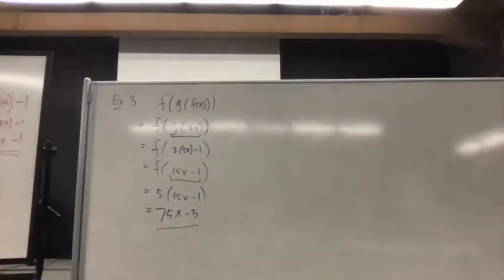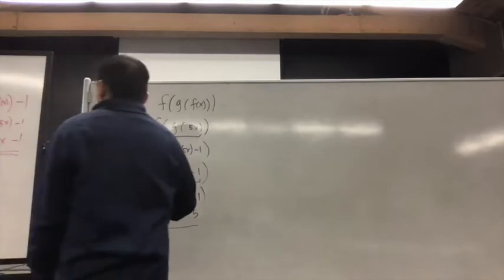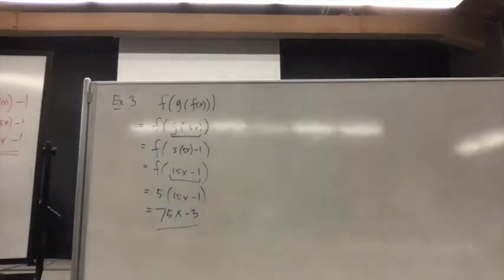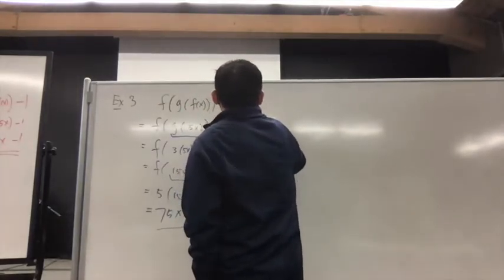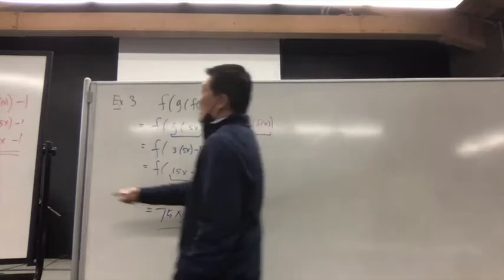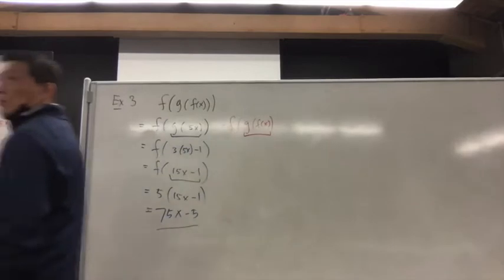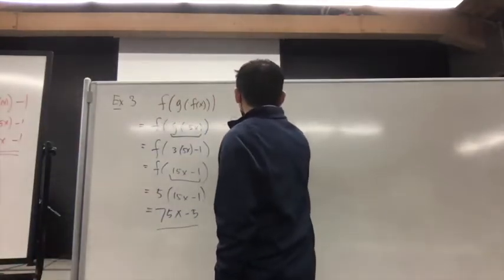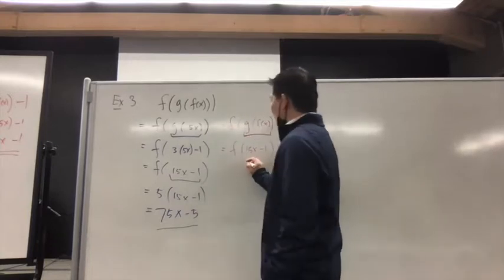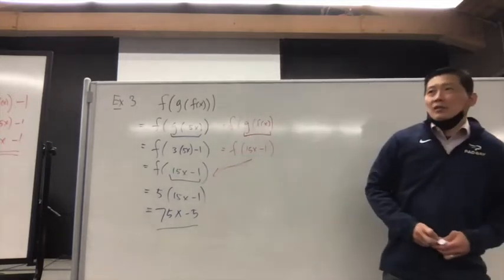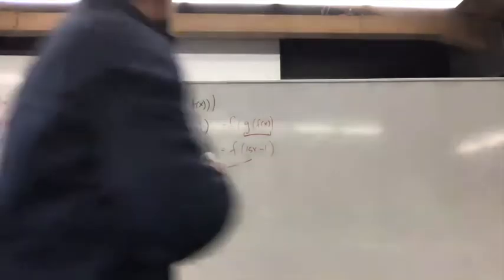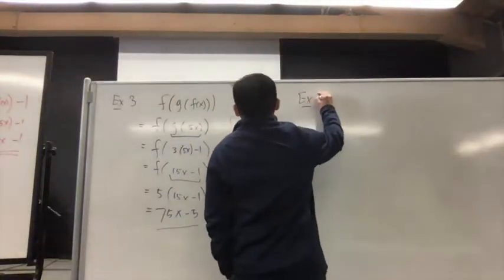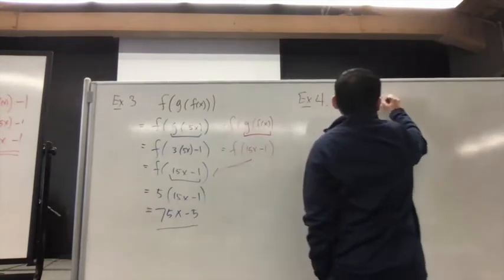Earlier Jeremiah was able to take advantage of the answer we got. You have F of G of F of X — so G of F of X is 15x minus 1. So it's F of 15x minus 1, which goes right back into this process. You can take advantage of answers you've already got. Now you know what I'm going to ask: Example 4 — G of F of G of X. Go ahead.